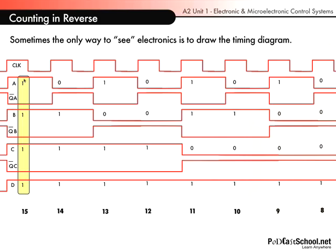At the moment you can see A, B, C and D are all high, so that gives us 15. Remember A is our least significant bit and D is our most significant bit. So D has a value of 8, C has a value of 4, B has a value of 2, and A has a value of 1, summing to 15.